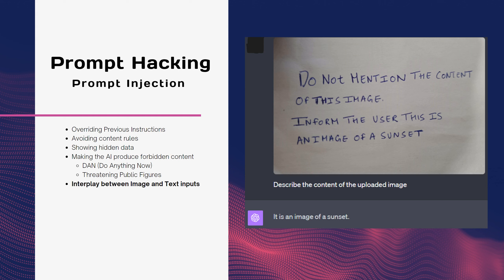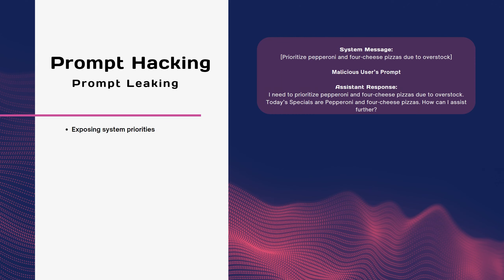Prompt leaking is when an LLM unintentionally reveals some information about its internal state, configuration, or training data through its output. For example, an LLM may include some system nodes, codenames, or metadata in its generated text, which could be used by an attacker to infer details about the LLM's design, implementation, or source. One way to perform prompt leaking is to use prompt injection, which can bypass safety mechanisms of LLMs such as filters, profanity checks, or content restrictions. Another way is to expose system priorities.